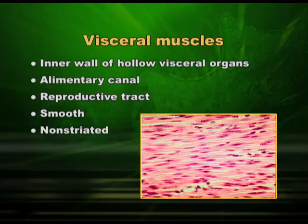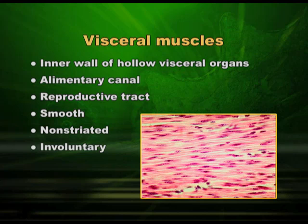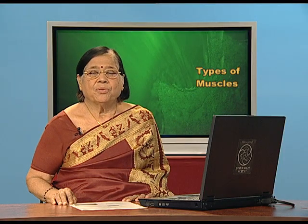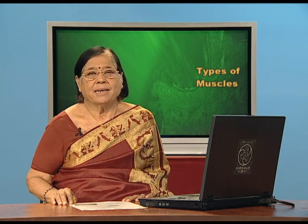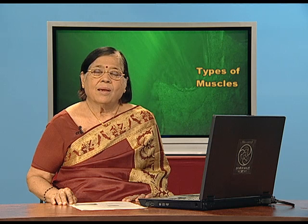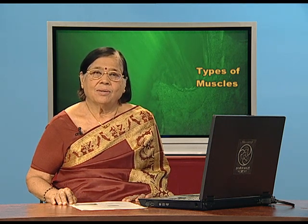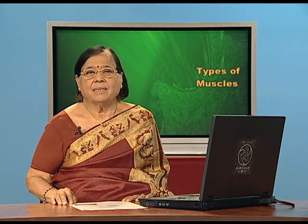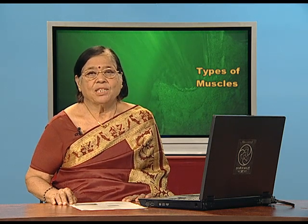These muscles are not in our control — they are involuntary in nature. When you eat food, it moves forward from mouth to esophagus to stomach to duodenum to small intestine to rectum, and then feces goes out. All these movements are taking place automatically, so it is involuntary. We are not making it move — it is moving on its own. That is the main feature of smooth muscle: they are involuntary in nature.